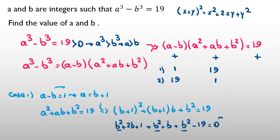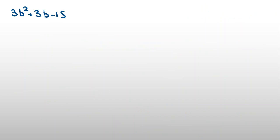Collecting like terms: b² plus b² plus b² gives 3b², and the b terms give 2b plus b which is 3b, plus 1 minus 19 gives minus 18. Writing it out: 3b² plus 3b minus 18 equals 0.